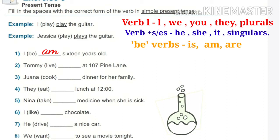I dash — the option is B, so what we will write with I is 'am' — I am 16 years old. Tommy lives in 107 Pine Lane. Joanna cooks dinner for her family. They eat lunch at 12. They is plural, so we will write the verb here as given in the bracket, as it is.